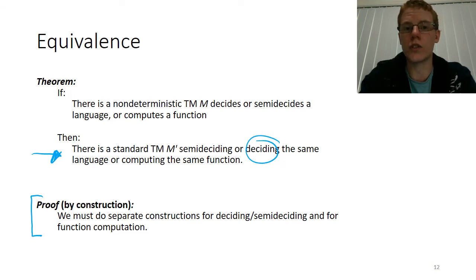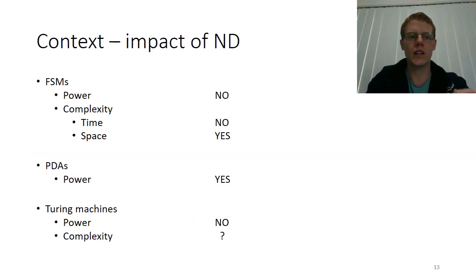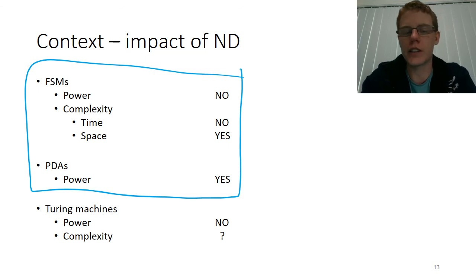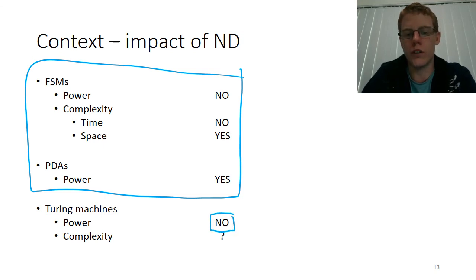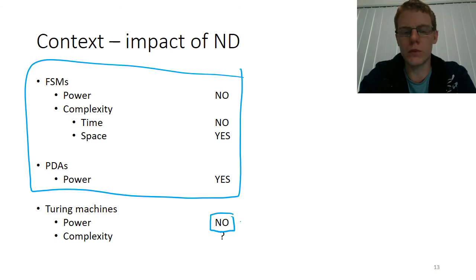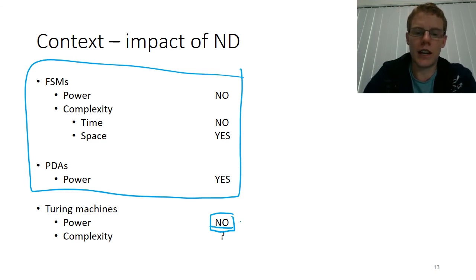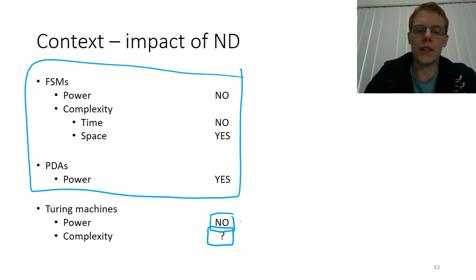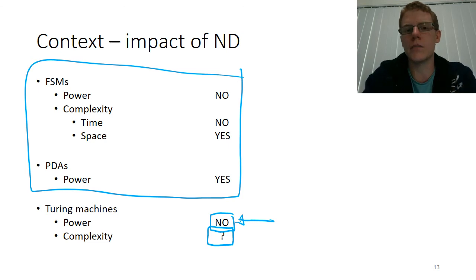To summarize, we already knew the answers about finite state machines and push down automata, and we asked the same questions about Turing machines. In the next video we'll give an introduction to the proof that non-determinism does not add power to Turing machines. The second question — about time and space complexity — is a well-known unanswered problem in computer science that you'll learn more about in algorithms courses. The key takeaway from this video, beyond the definitions of non-deterministic deciding, semi-deciding, and function computation, is that non-determinism does not add power to Turing machines.